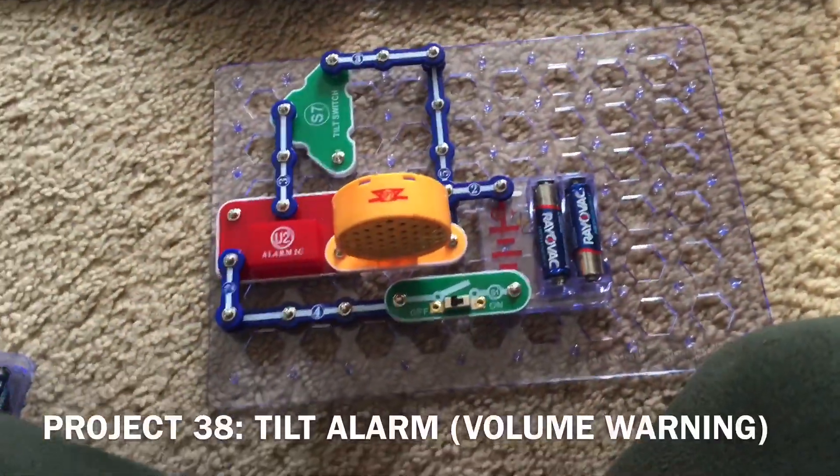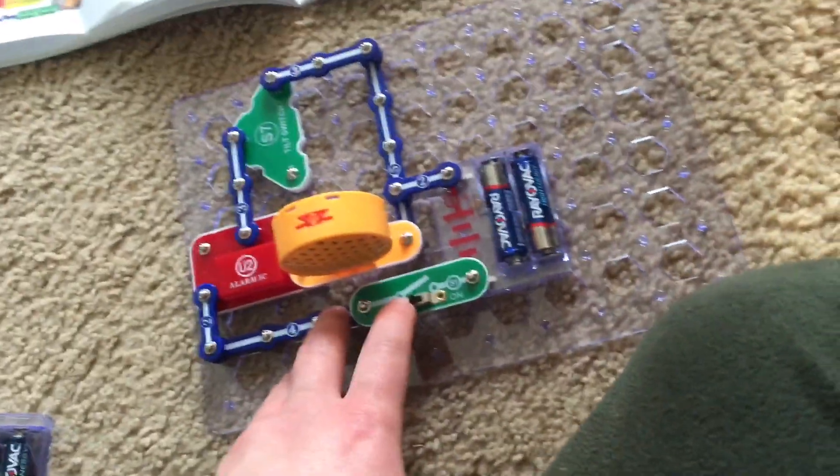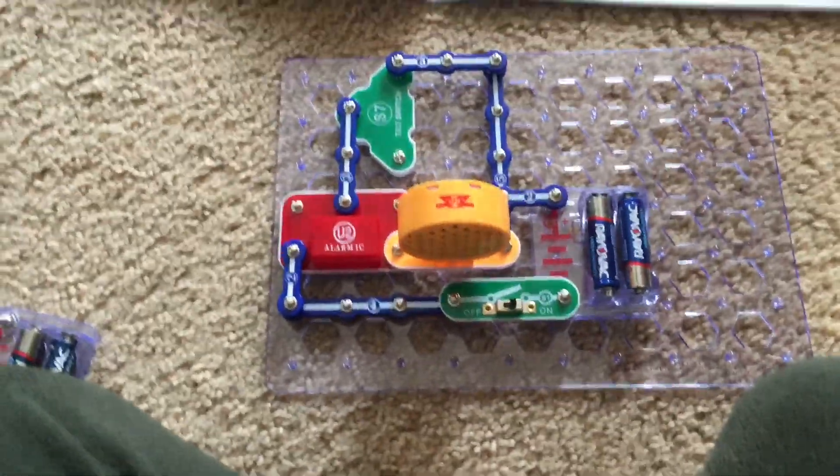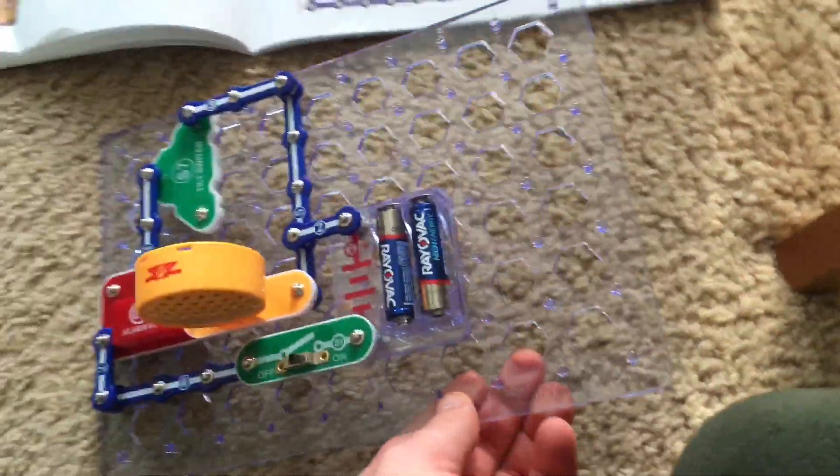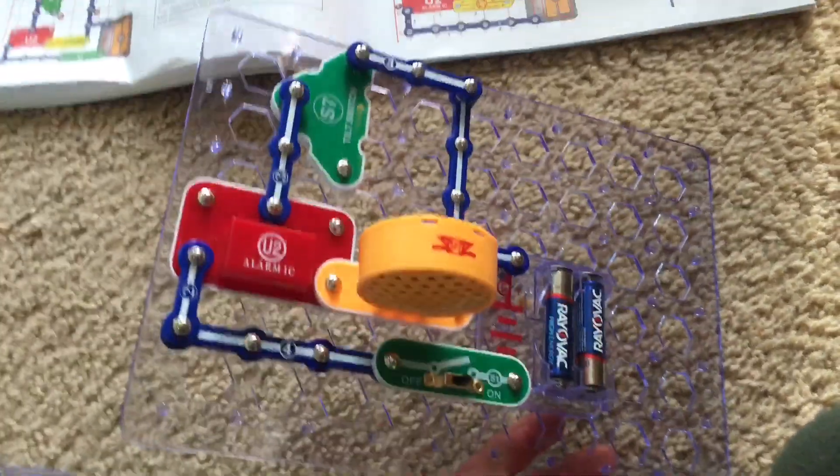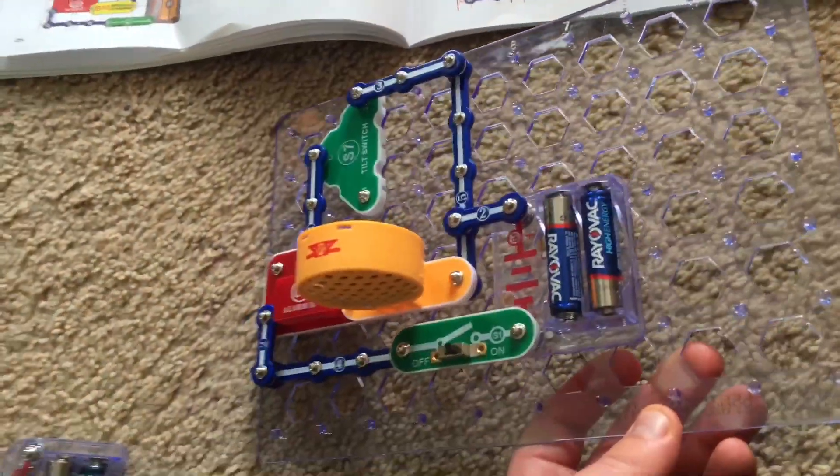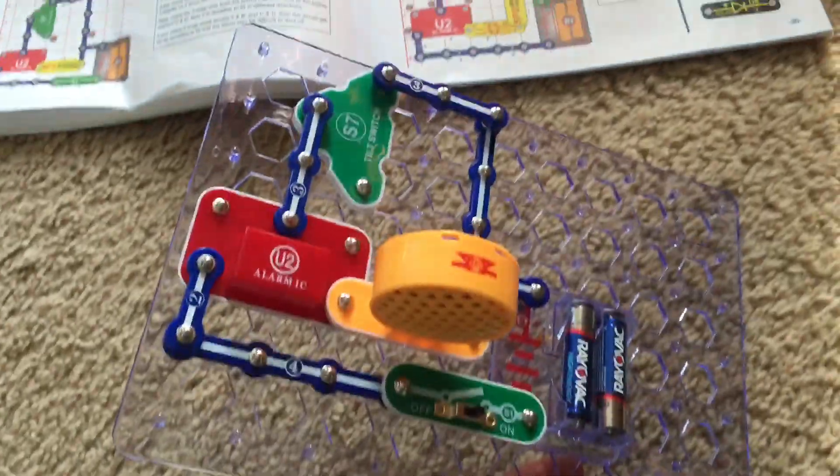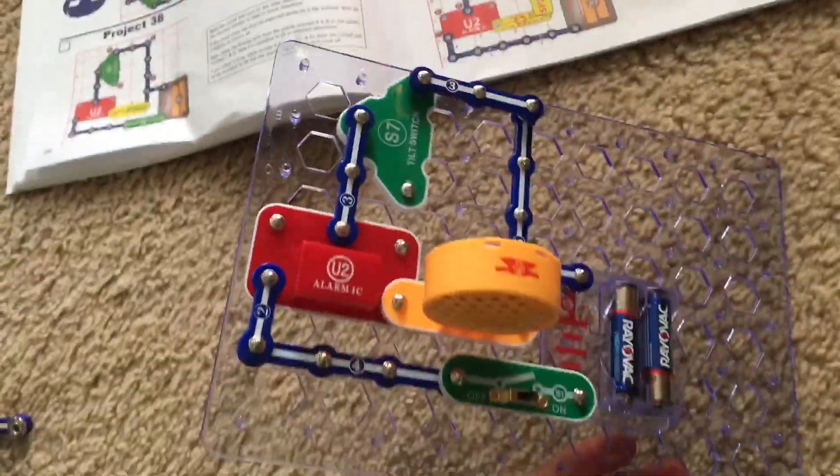I'm going to turn on the slide switch and when I tilt the circuit a certain way an alarm will sound. The tilt switch activates the alarm when the bottom side of it closes the contact to complete the circuit.